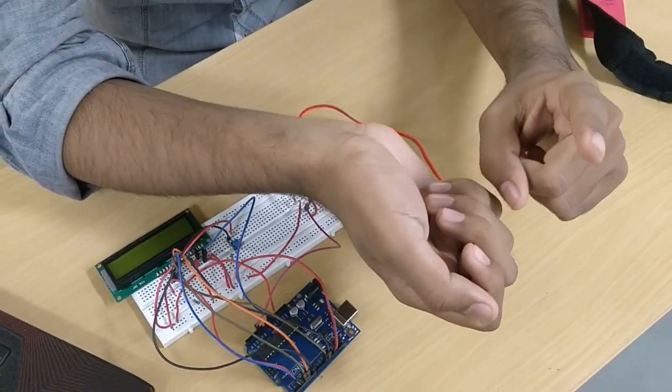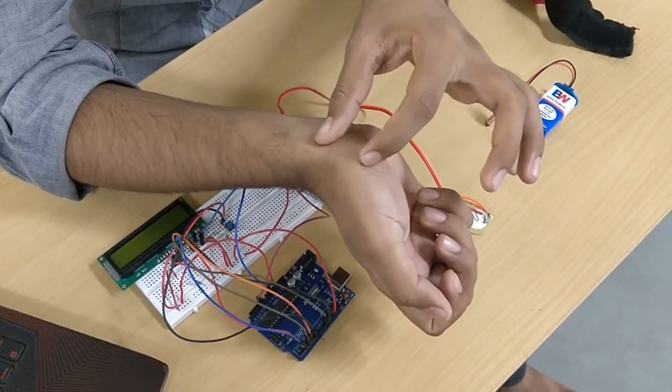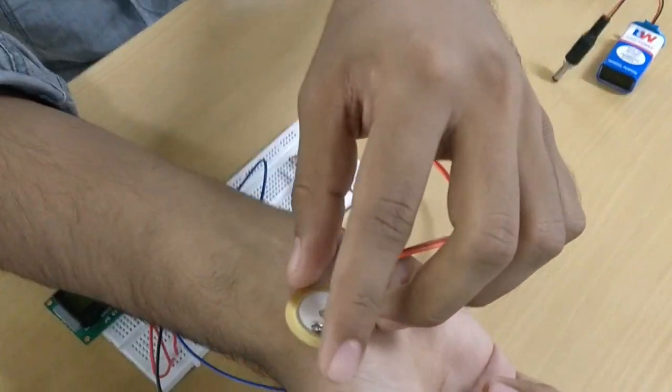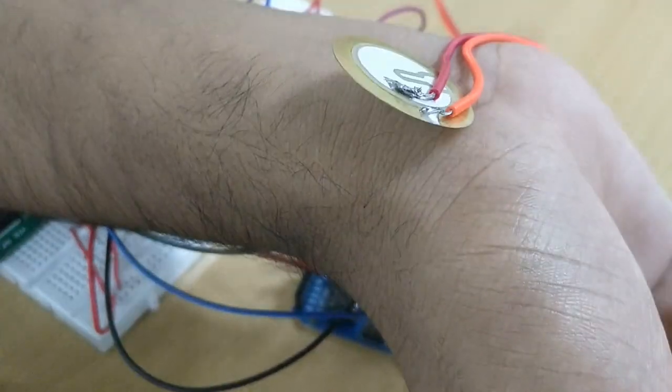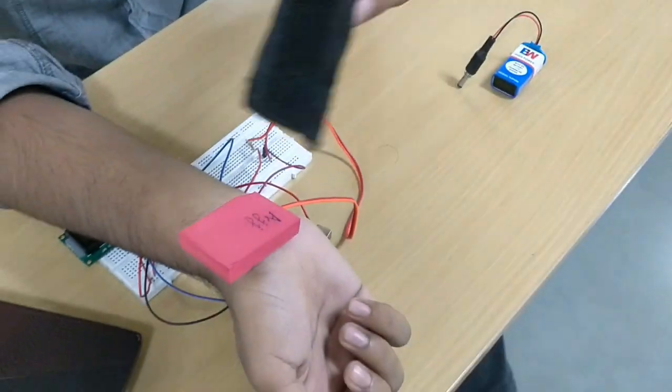First of all, find a blood vessel where you can feel your pulse in a line of thumb. After it, put a piezoelectric sensor on that blood vessel, put a pad on it and tie it with a band.